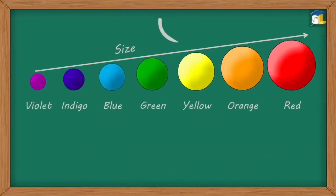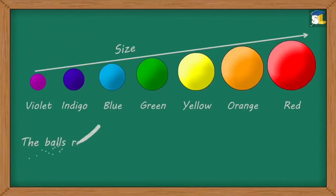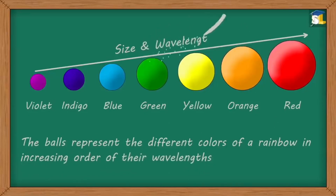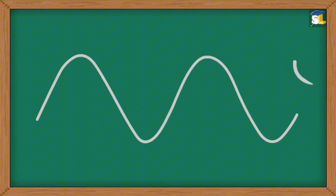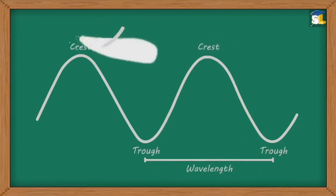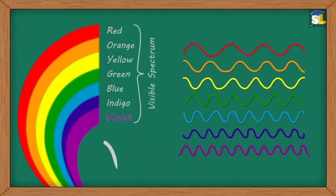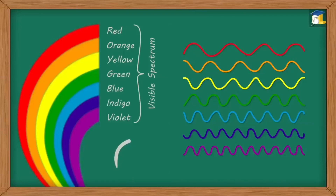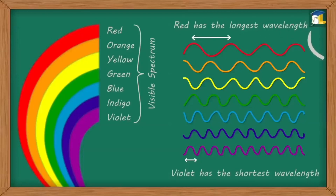Did you notice that the size of the balls increased? Yes, you guessed right. The balls represent the different colors of a rainbow in increasing order of their wavelengths. Wavelength is the distance between consecutive crests or consecutive troughs in a wave. In a rainbow, as we move from violet to red, the wavelength of colors increases. Violet has the shortest wavelength, while red has the longest wavelength.